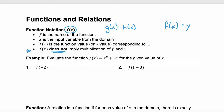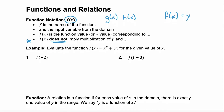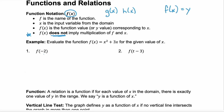Here's an example. We're going to evaluate the function f of x equals x squared plus 3x for given values of x. To evaluate means to substitute in the given value for x. So f of negative 2 is saying calculate your f function when x is negative 2. f of negative 2 equals negative 2 squared plus 3 times negative 2. Negative 2 squared is 4, and 3 times negative 2 is negative 6, so that equals negative 2. So f of negative 2 equals negative 2.